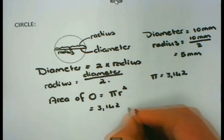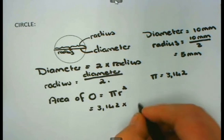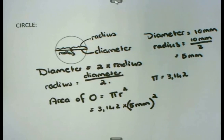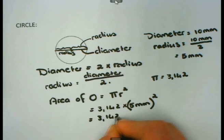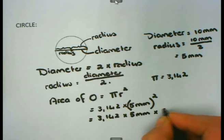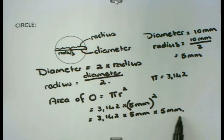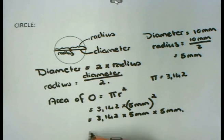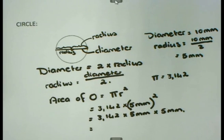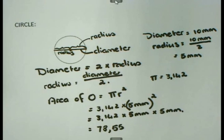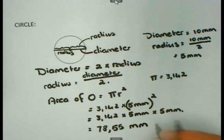I take 3.142 and multiply it by radius squared. The radius is 5 mm, so I must square it — which is 5 mm times 5 mm. Whether using a scientific calculator or an ordinary one, the calculation gives: 3.142 times 5 times 5 equals 78.55. The unit is millimeters times millimeters, which gives millimeters squared.